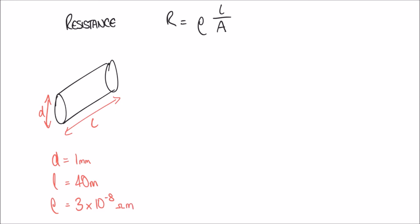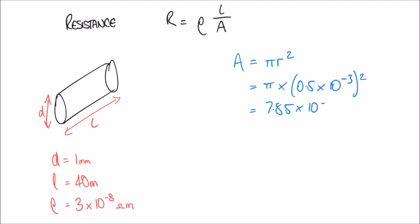We run into the same problem: we need the area but are only given the diameter. We calculate area as pi r squared. The radius is half the diameter, so 0.5 millimetres, which in standard form is 0.5 times 10 to the minus 3. Squaring and multiplying by pi gives 7.85 times 10 to the minus 7 metres squared.